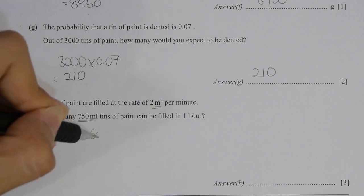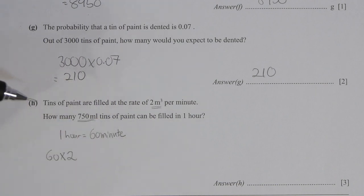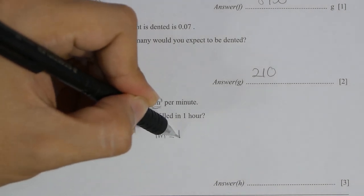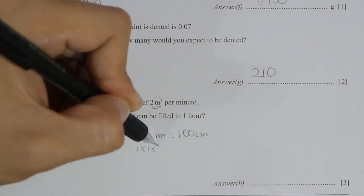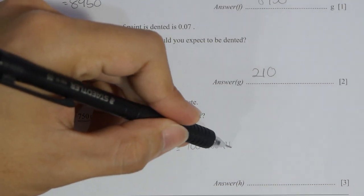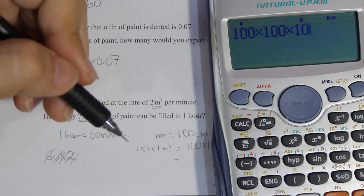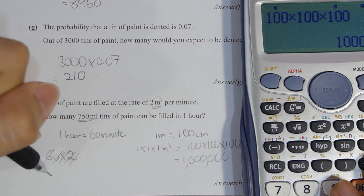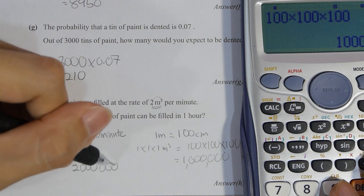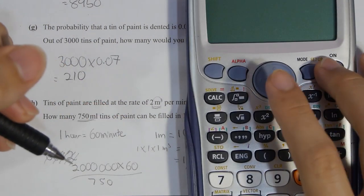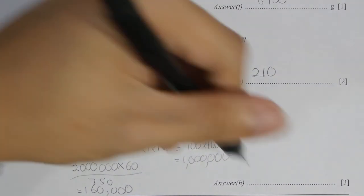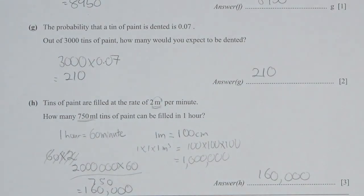A tin of paint is filled at the rate of 2 cubic meters per minute. 1 meter equals 100 cm, hence 1 cubic meter equals 100 times 100 times 100, so the result is 1 million cm³. So 2 cubic meters per minute equals 2 million cm³ per minute. Multiplied by 60 and divided by 750, you are able to fill up 160,000 tins of paint per hour.